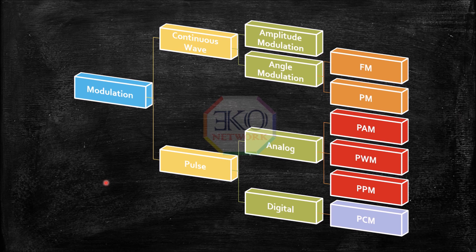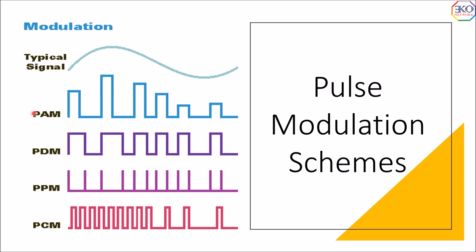In pulse modulation schemes, which are categorized as analog and digital — under analog, we have pulse amplitude modulation, pulse width modulation, and pulse position modulation. And under a digital modulation scheme, we have pulse code modulation. The only difference between continuous modulation and pulse modulation is the usage of a pulse carrier in the case of pulse modulation schemes.